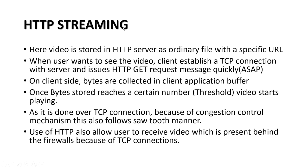In HTTP streaming, video is stored on an HTTP server as an ordinary file and a URL is provided for each video. When the user wants to watch the video, they request it via an HTTP GET request. On the client side, bytes are collected in the client application buffer from the server. Once enough bytes are stored, the video starts playing. Since it runs over TCP with congestion control, it also follows a sawtooth pattern in rate. The firewall issue present in UDP streaming does not apply here since TCP connections are used.